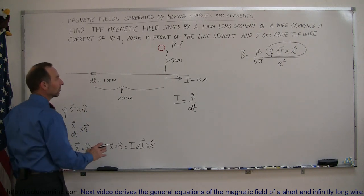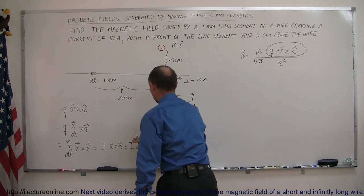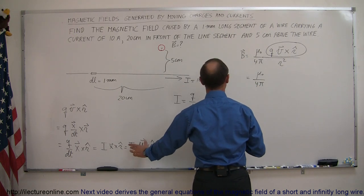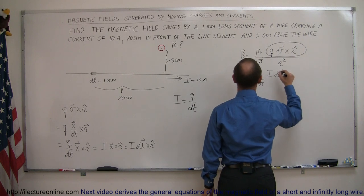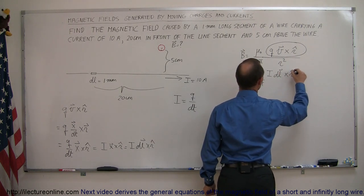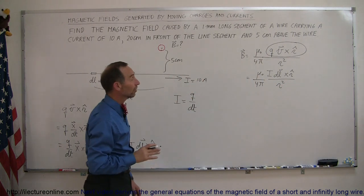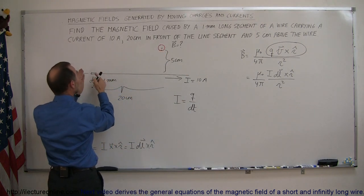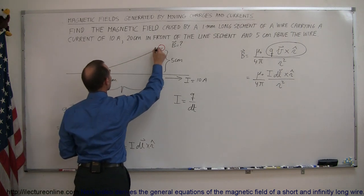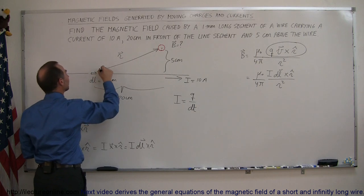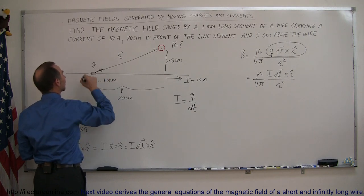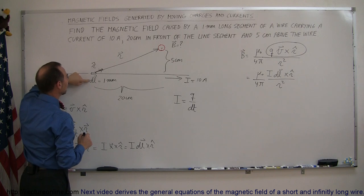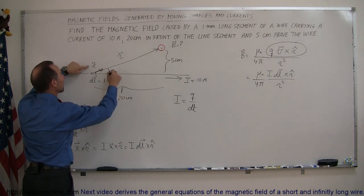We can now replace the Q v cross r̂ term in the original equation. The magnetic field B equals mu-naught over 4π, times i times DL cross r̂, divided by r squared. The unit vector r̂ points from the line segment to the point of interest. If we draw the r vector from the segment to the field point, and we cross DL cross r̂, we get the magnitude of DL times the magnitude of r̂ times the sine of the angle theta between them.